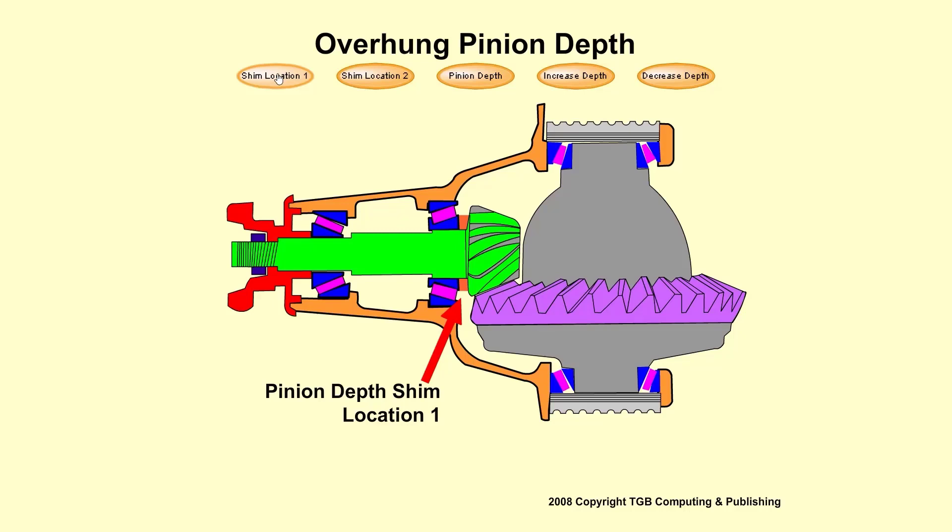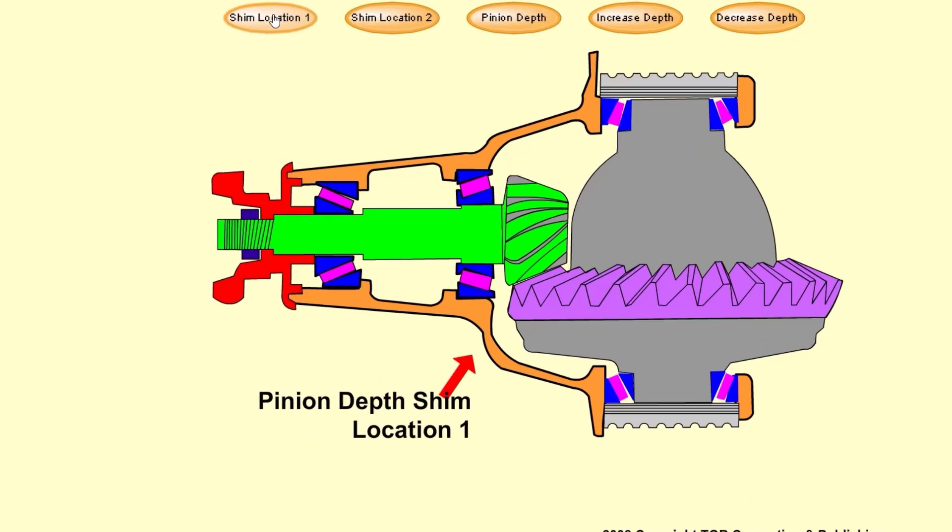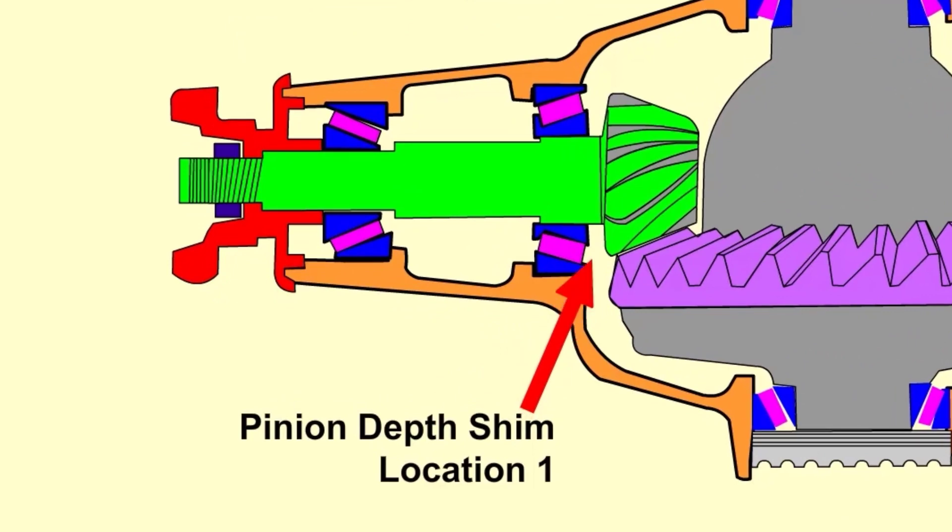Pinion Depth Shim Adjustment on an Overhung Design. Pinion depth is controlled by using shims. There are two locations on the overhung design. The design you have will be one or the other.